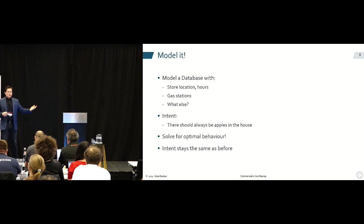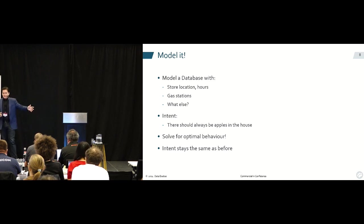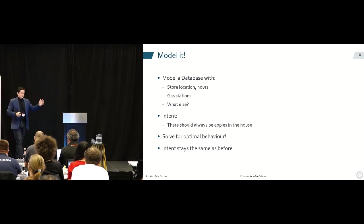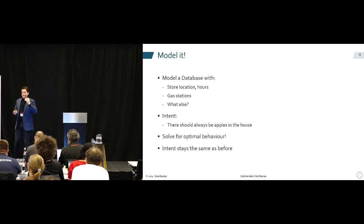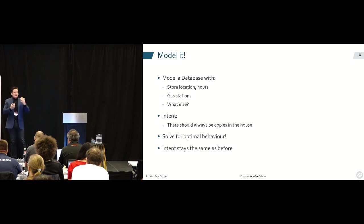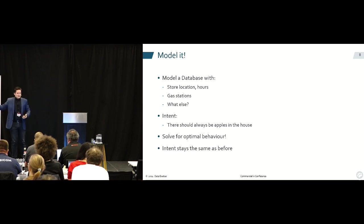The great thing here is you can keep the same simple intent but then improve the model so you can do it even better. You could add another grocery store, add information about which things are on sale, hours and traffic conditions — all this stuff could be put into your database. Then you can make very intelligent decisions, such as maybe getting more than one thing when you go to the grocery store.